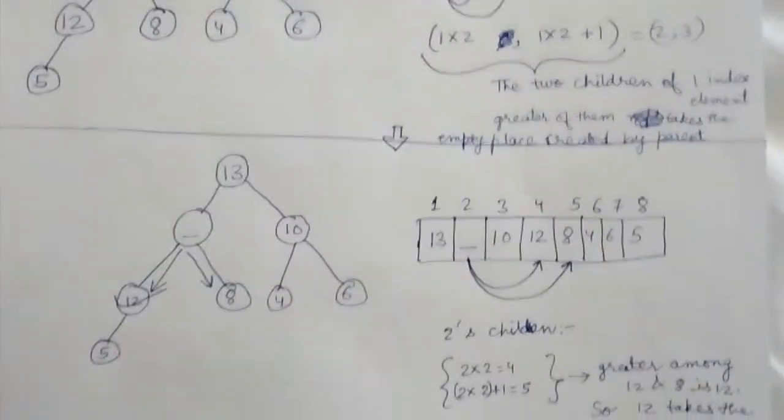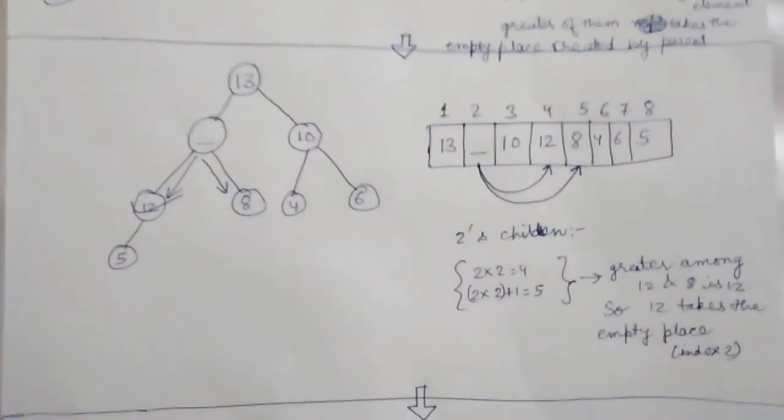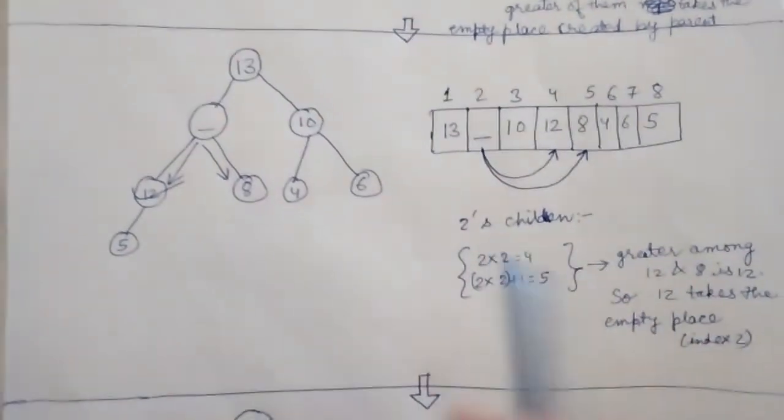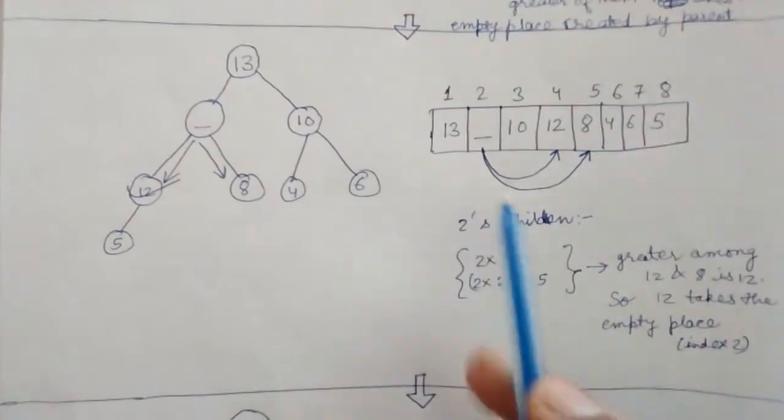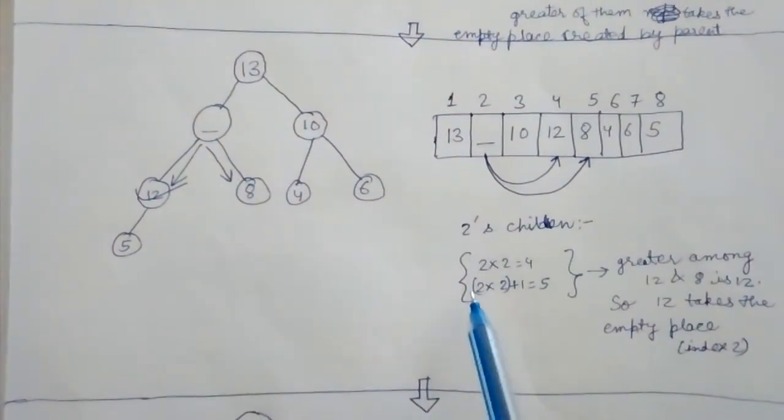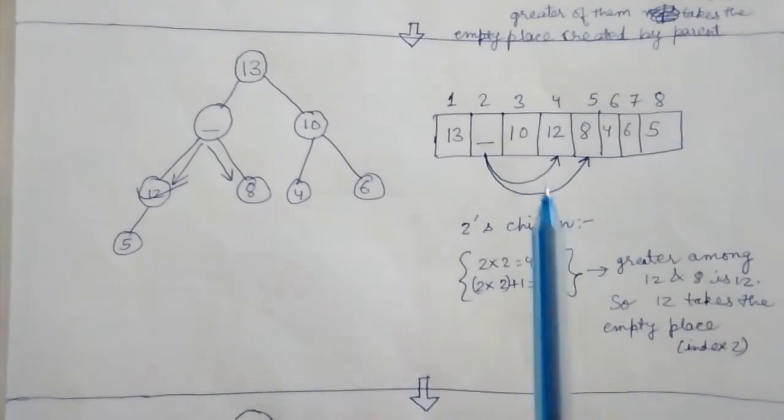Now our task is to fill that place. Index 2 is empty. Its children are 2×2=4 and 2×2+1=5.